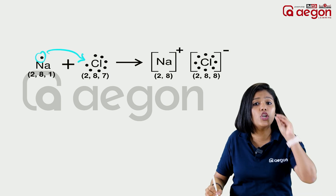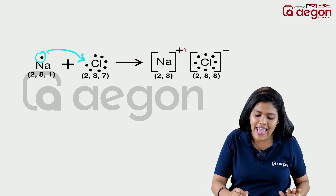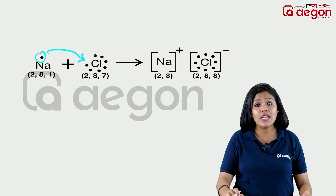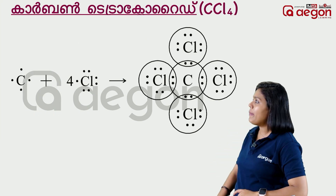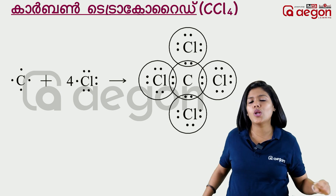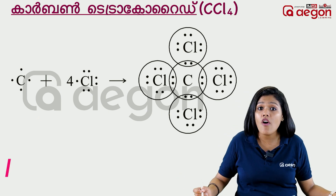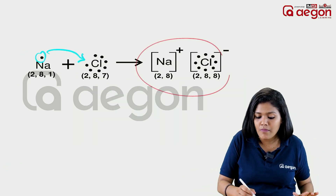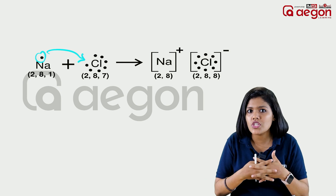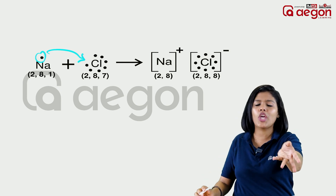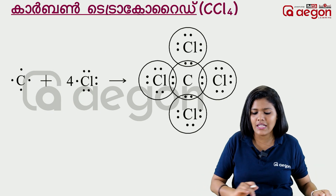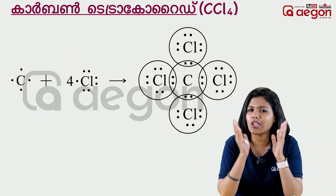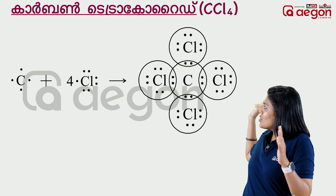Sodium chloride — Sodium donates one electron, forming Na plus. Chlorine receives it, forming Cl minus. This is an ionic bond — ion formation where Sodium electrons are transferred to Chlorine. Next, Carbon tetrachloride CCl4 is a covalent bond, where Carbon and Chlorine share electrons.